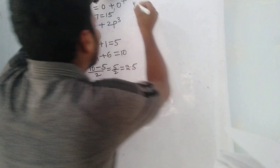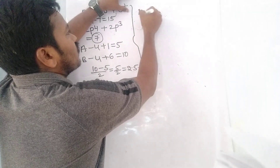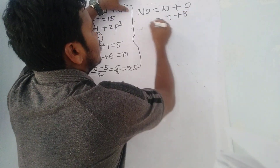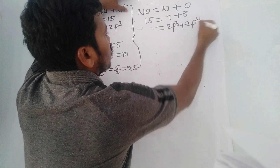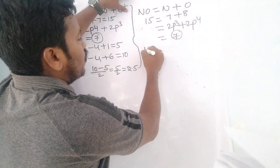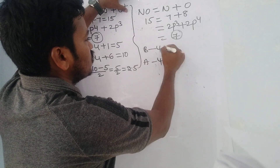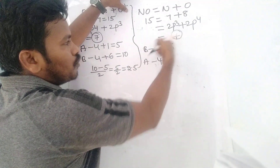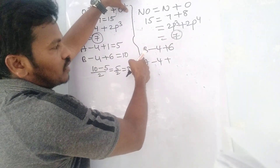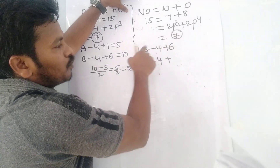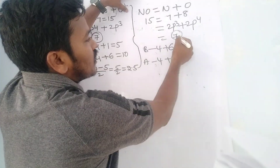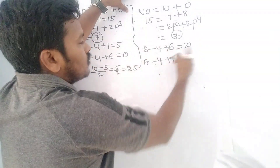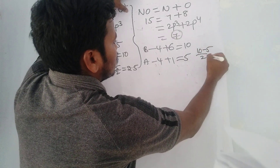Next example: NO. N + O, atomic numbers 7 + 8 = 15 total electrons. P-configurations: 2p3 for N, 2p4 for O. Total p-electrons: 3 + 4 = 7. Rule: if p-electrons are 1, 2, 3, 4, 5, or 6, add all to bonding. If more than 6, add 6 to bonding and the remainder to anti-bonding. Here, 7 > 6, so add 6 to bonding and 1 to anti-bonding: bonding = 4 + 6 = 10, anti-bonding = 4 + 1 = 5. Bond order = (10 − 5) / 2 = 2.5.